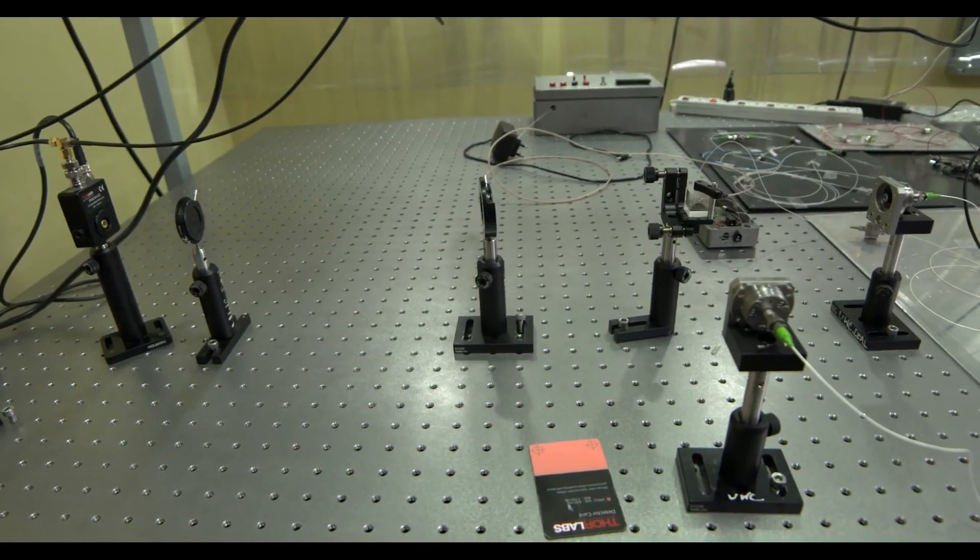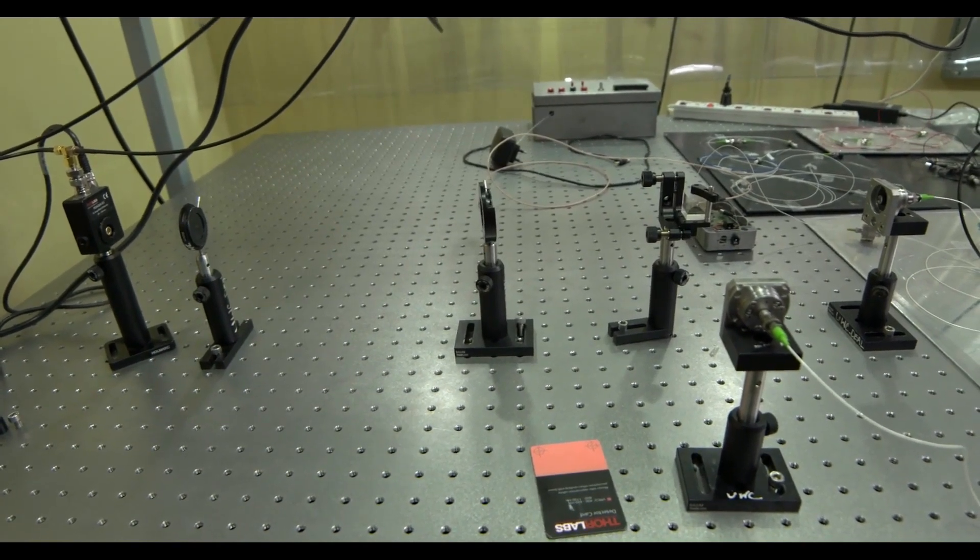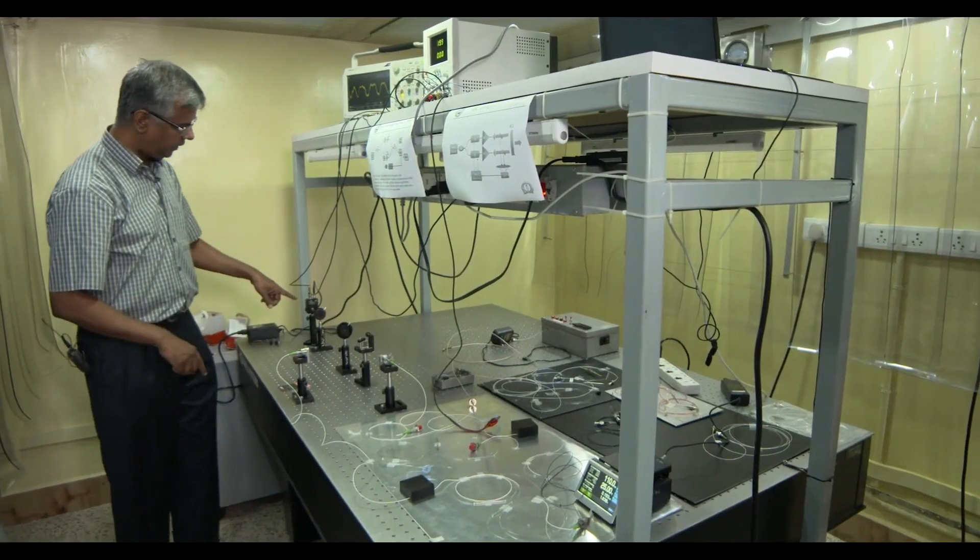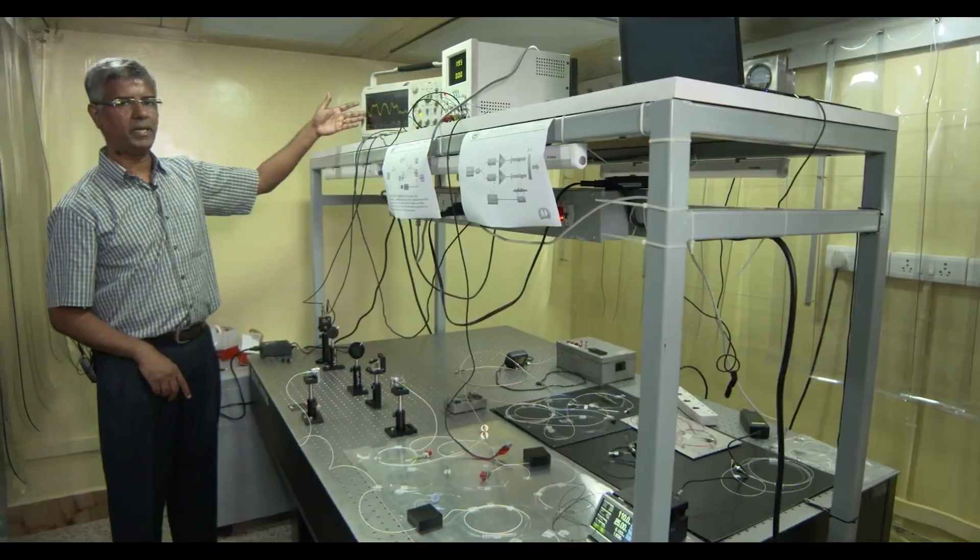So both these beams, so one beam going straight down, another beam going to the beam combiner and then getting deflected over here. Both are combining and then we have a detector over here which is representing the total beam.